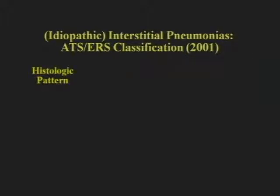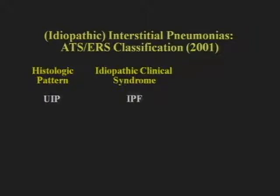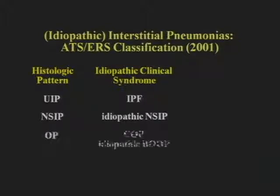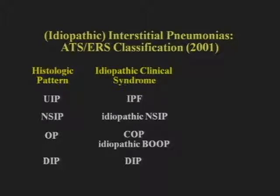The American Thoracic Society and European Respiratory Society classified these interstitial pneumonias in 2001, agreeing on terminology since different terms had been used in the US versus Europe. They made a distinction between the histologic pattern of the interstitial pneumonia and the idiopathic clinical syndrome associated with it. The histologic pattern UIP when idiopathic is called IPF or idiopathic pulmonary fibrosis. Nonspecific interstitial pneumonia when idiopathic is called idiopathic NSIP. Organizing pneumonia when idiopathic is called COP (cryptogenic organizing pneumonia), sometimes called idiopathic BOOP in the US. DIP when idiopathic is simply called DIP.